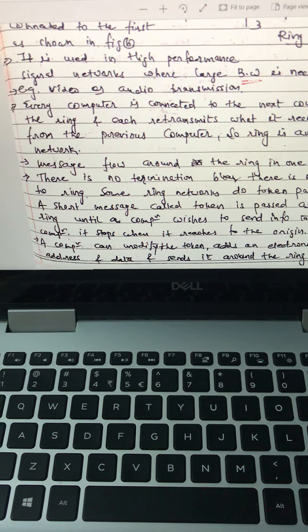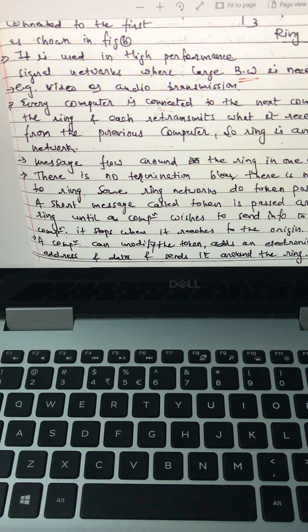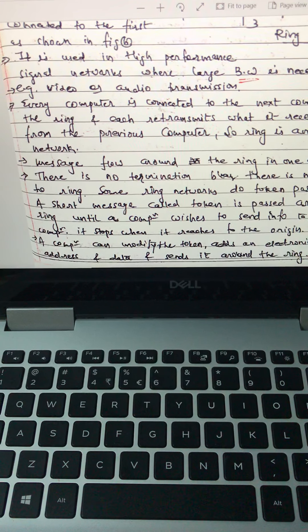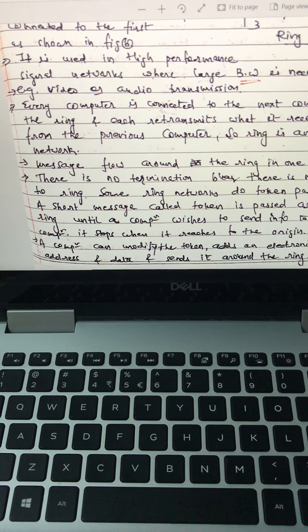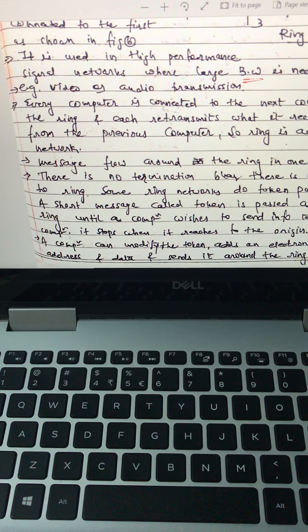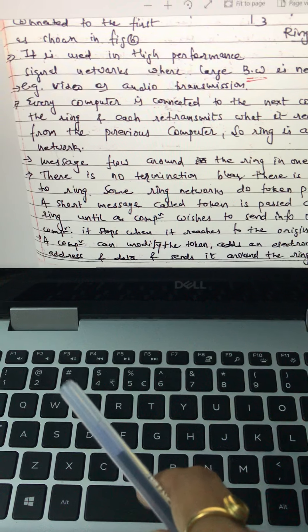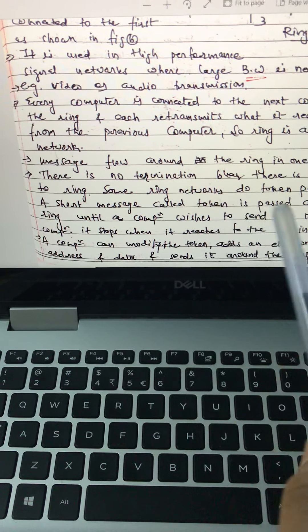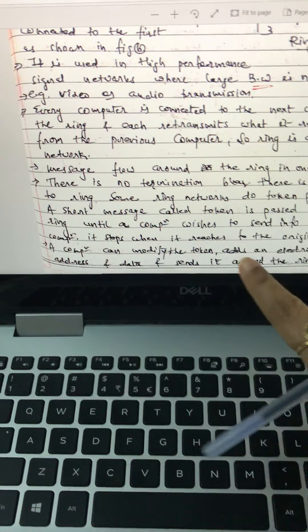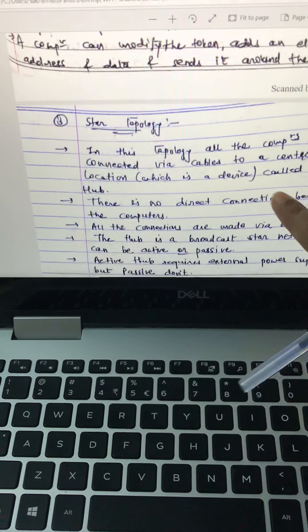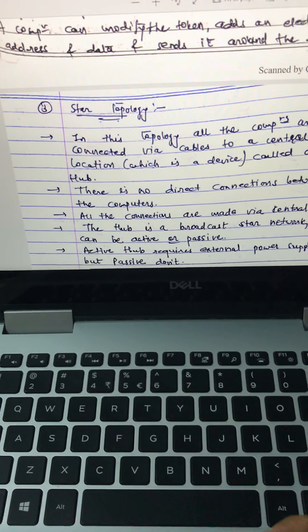Some ring networks do token passing. A short message called a token is passed around the ring until a computer wishes to send information to another computer. It stops when it reaches the origin. So that technique is known as token technique. A computer can modify a token, add an electronic address and data, and send it around the ring.